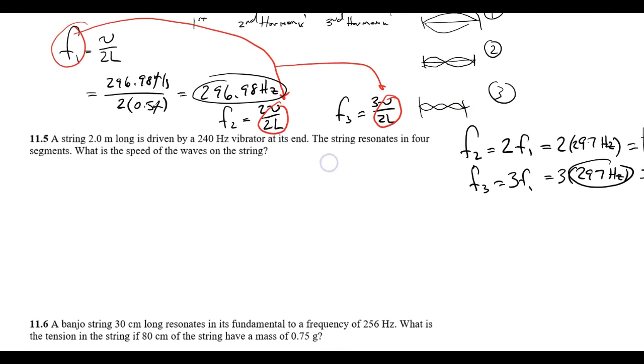All right, let's look at the next one. It says a string that's 2 meters long is driven by a 240 hertz vibrator. So the frequency is 240 hertz. The string resonates in four segments. You're going to see this kind of action there. There's four segments, which means it's the fourth harmonic, or n equals 4. What is the speed of the waves on the string?